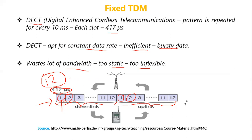Fixed TDM is suitable for constant data rate traffic like voice communication, but it is not efficient for bursty data such as internet browsing. It wastes bandwidth and is too static and inflexible. In summary, TDMA allows all stations to use the same frequency but at different time slots. Fixed TDM assigns permanent time slots per user, while dynamic TDM assigns slots based on demand. This example also shows how fixed TDM is used in digital enhanced cordless wireless communication.